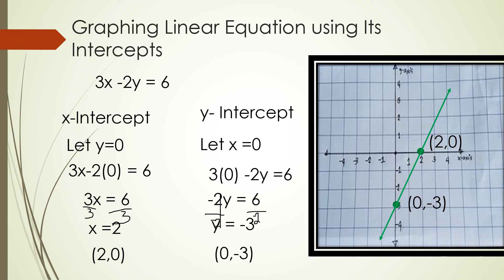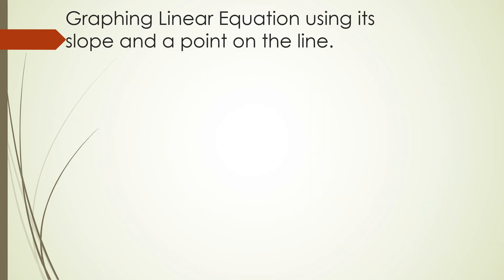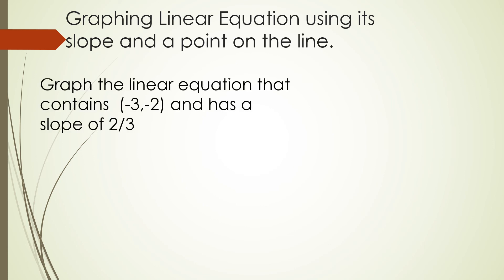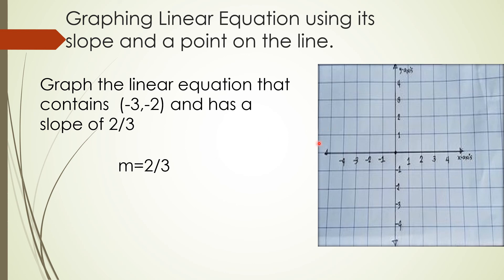Now, graphing a linear equation using its slope and a point on the line. The slope is 2/3 and the given point is (negative 3, negative 2). Using rise over run: the rise is 2 (positive, meaning go up) and the run is 3 (positive, meaning go right). First, plot the point at x equals negative 3 and y equals negative 2, going down 2 units from the x-axis. That's the first point.